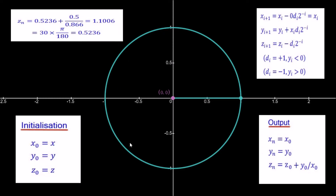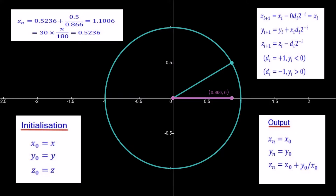We start off with the unit circle and we're going to pick an angle of 30 degrees. This is the vector sitting at 30 degrees and you can see the point 0.866 comma 0.5. The initialization is x naught, y naught, and z naught are x, y, and z. So x naught is 0.866, y naught is 0.5, and z naught is the angle which is 30 degrees.